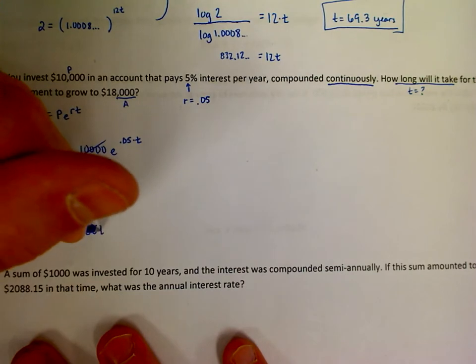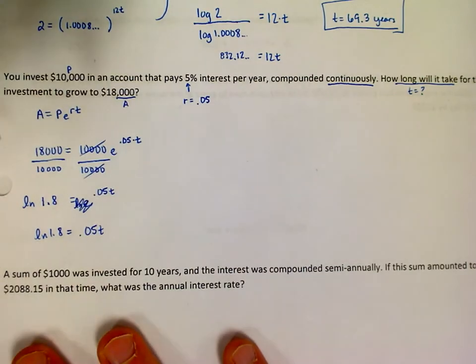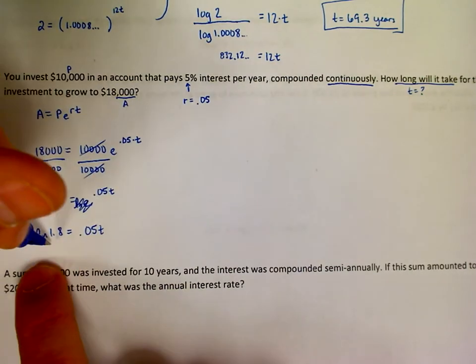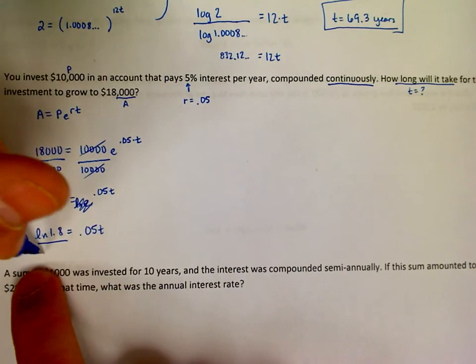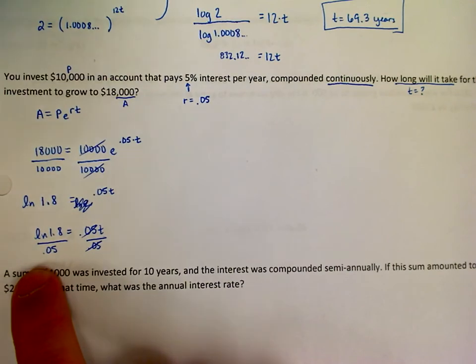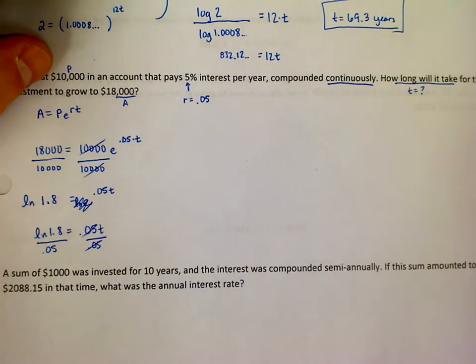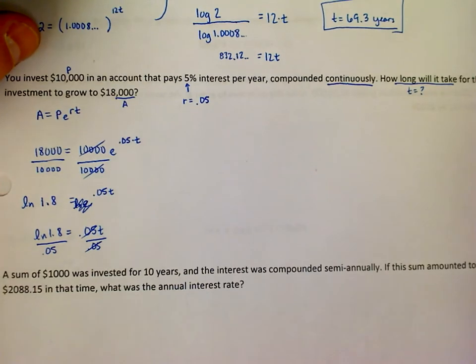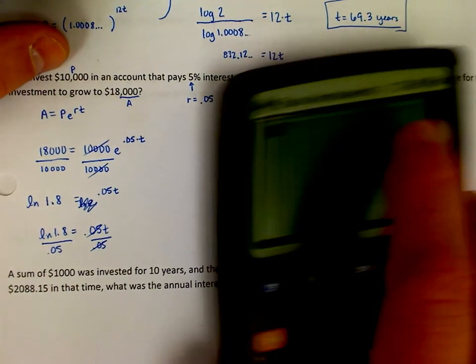So what I'm going to do on my calculator is I'm going to take the natural log of 1.8, and then I need to divide it by 0.05 after I get that value, because that will get the time by itself. It should take a while, guys. It should take a while. If you find out that you get an answer like 0.02 days, okay that's a problem. That should raise a warning flag.